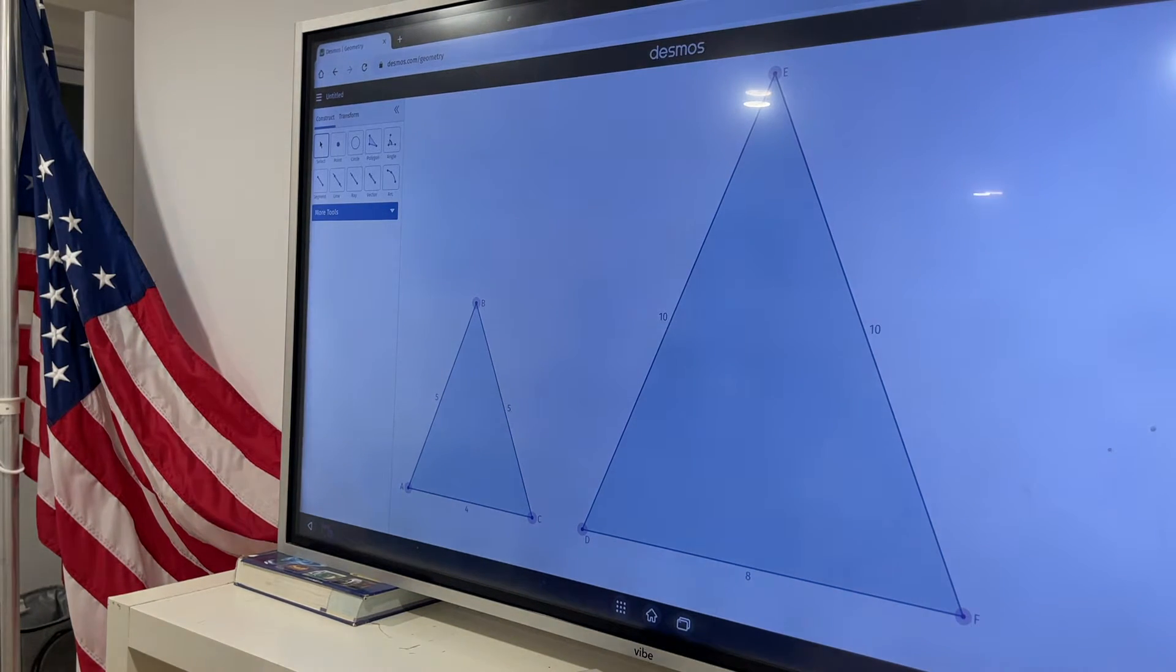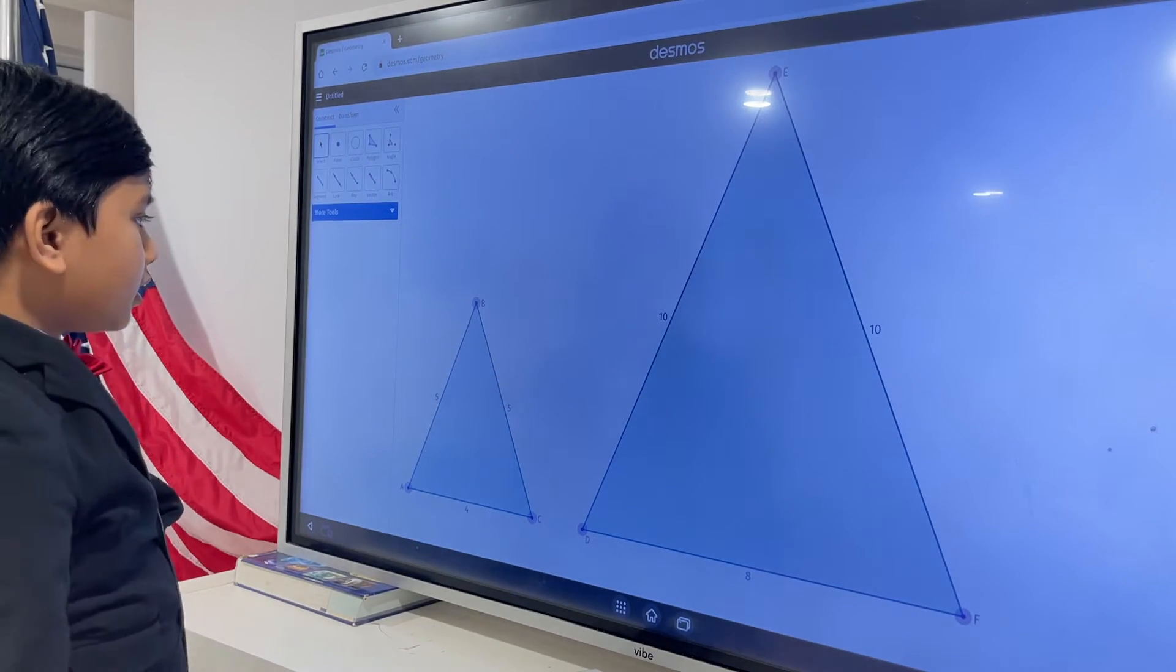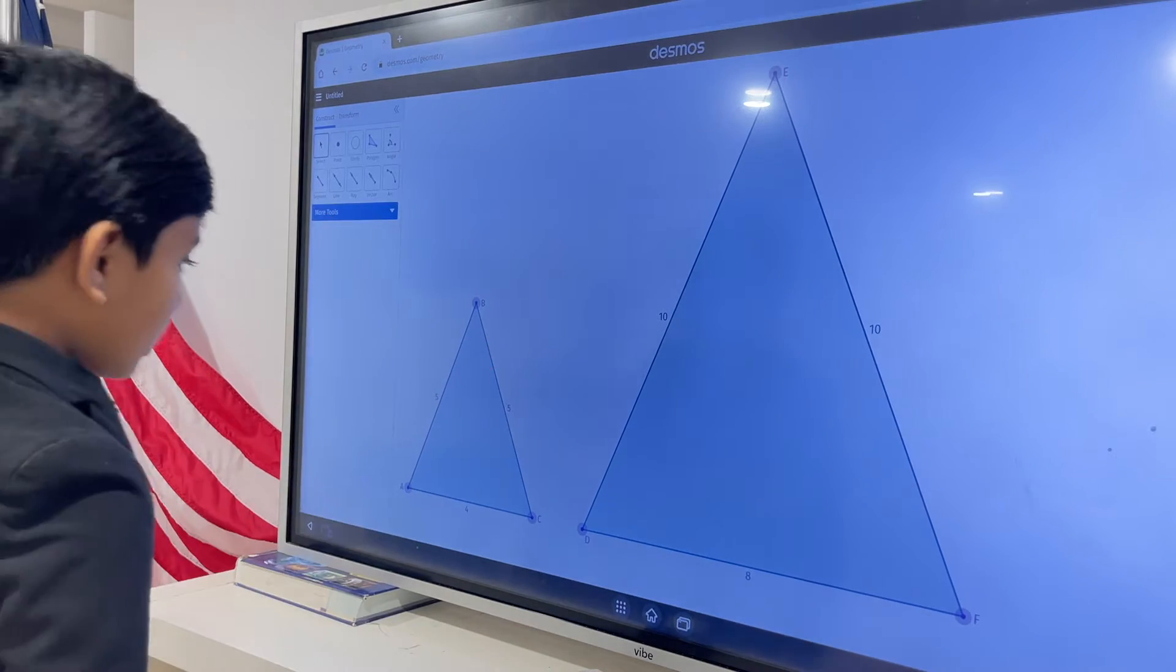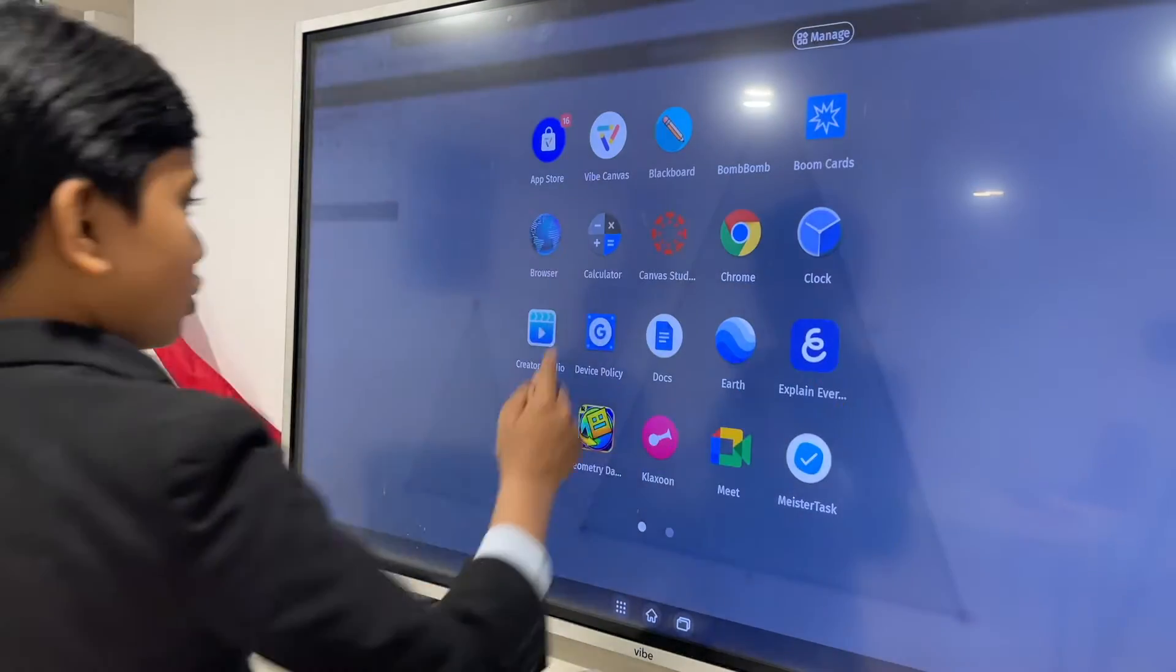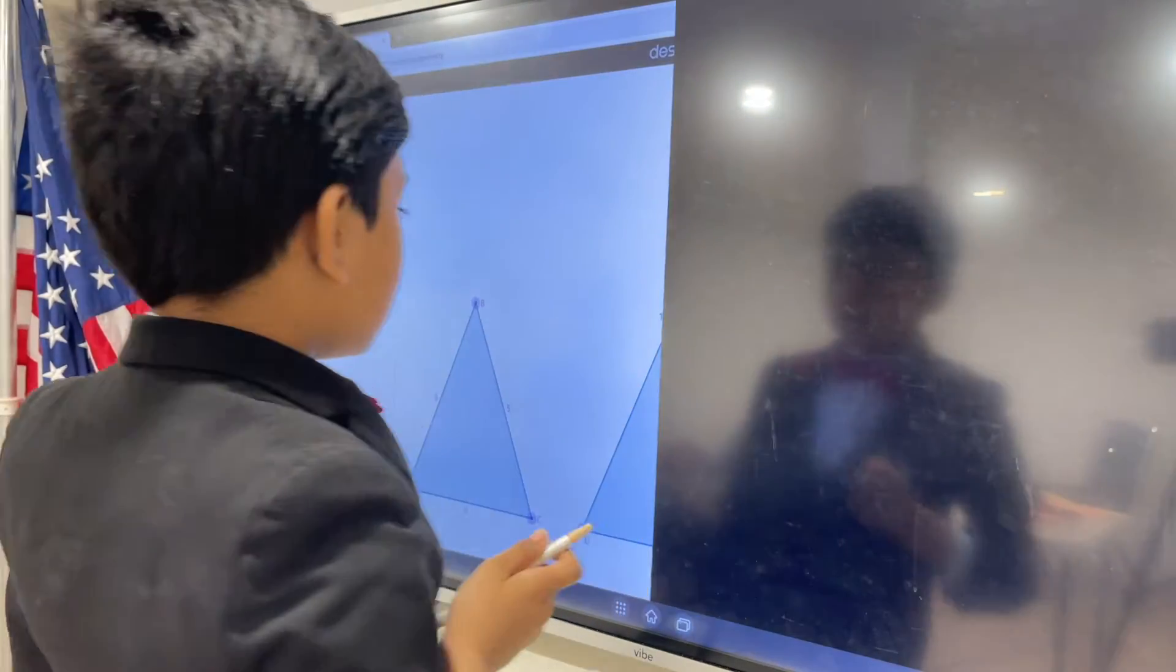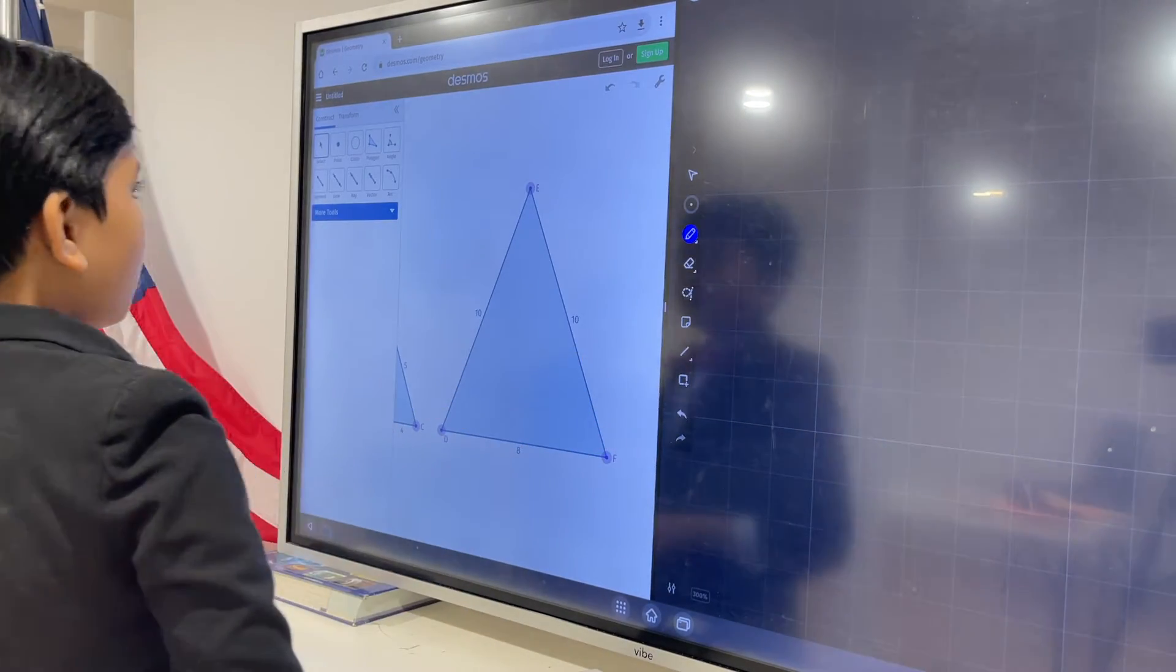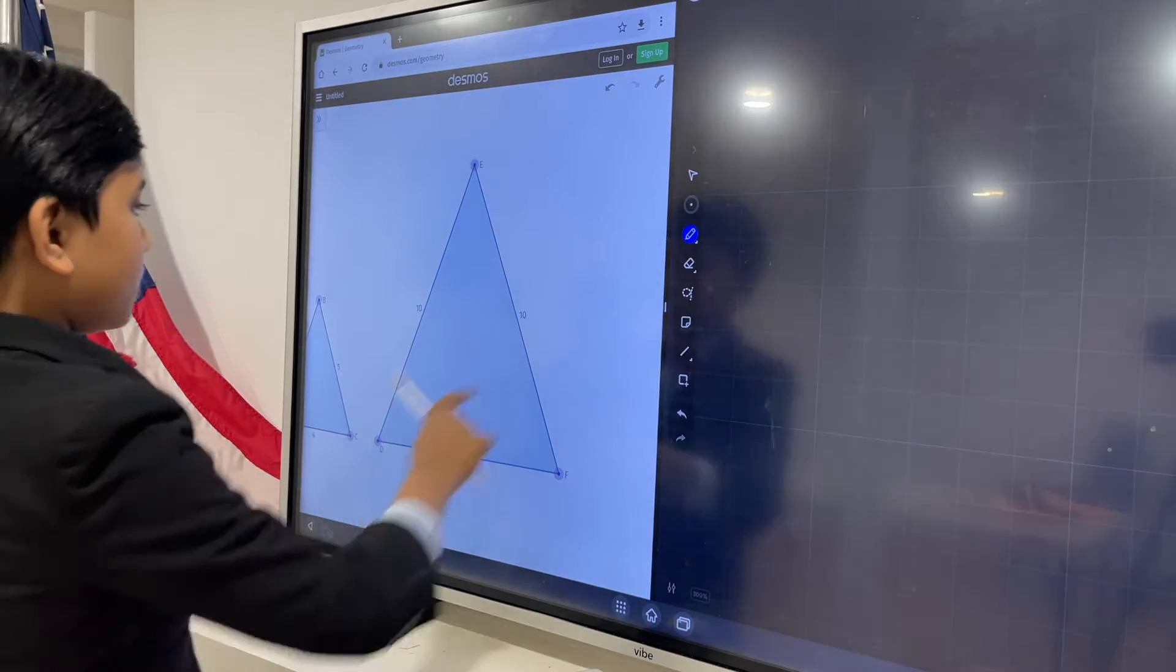Well, obviously if we look at this, these two aren't congruent. One is definitely much smaller than the other. However, if you are pretty observant, let's put this over here. So if you are observant, let's take this, put it to the side.